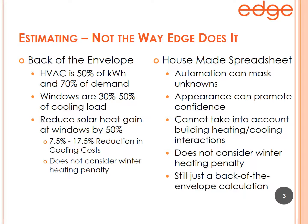The format and complexity of the reports, and just the appearance of the spreadsheet, can promote confidence in its results when in fact the automation is still masking what you don't know. These spreadsheets do not take into account building heating and cooling interactions — in any given building you could have simultaneous heating and cooling.